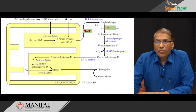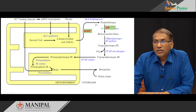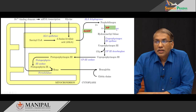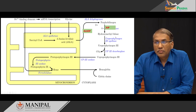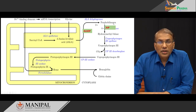The next acute porphyria is acute intermittent porphyria. The enzyme absent here is PBG deaminase, or porphobilinogen deaminase, which forms hydroxymethyl bilane. Whatever accumulates is porphobilinogen, and since it is not yet a porphyrin, it also does not have photosensitivity.